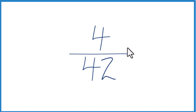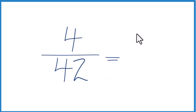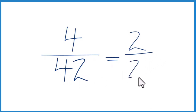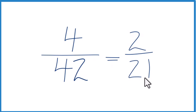Since they're both even numbers, I'm going to divide the numerator and denominator by 2. 4 divided by 2 gives us 2, and 42 divided by 2 is 21. We can't simplify 2 over 21 any further — it's in lowest terms. So in answer to our question, when we simplify the fraction for 40 seconds, we get 2 21sts.